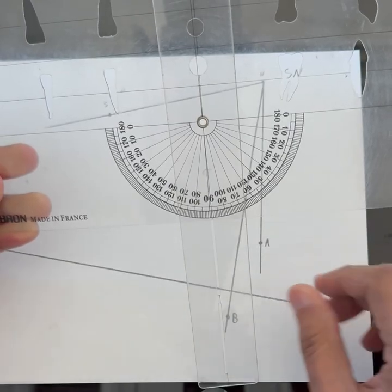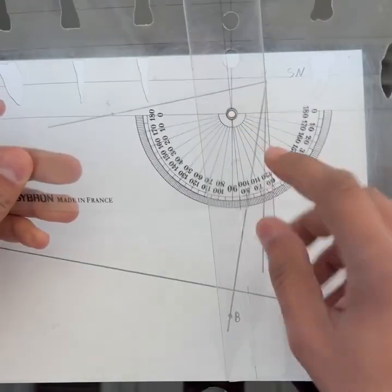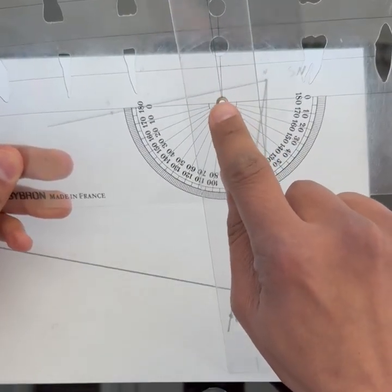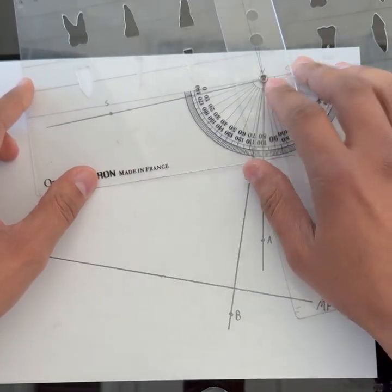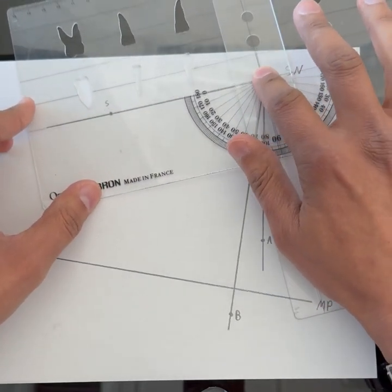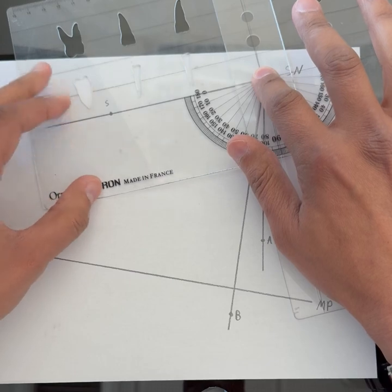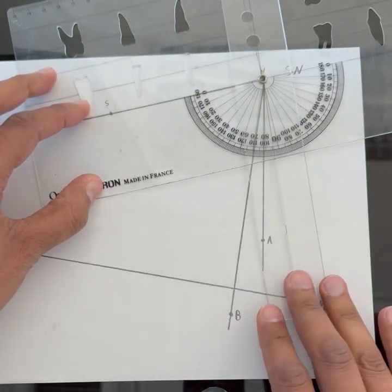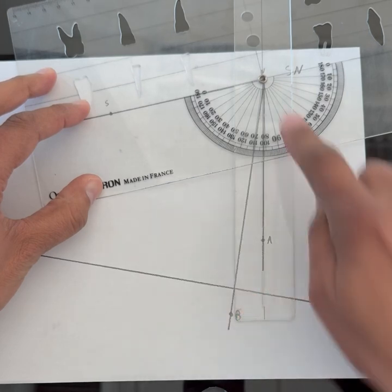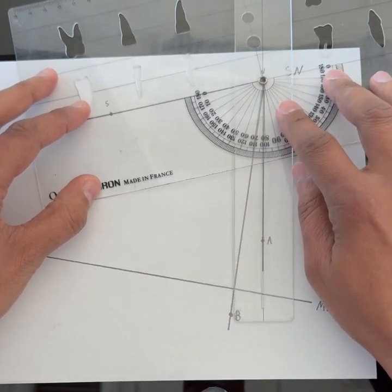To start, you want to place the center of a protractor in the center of the angle you're measuring. You want to make sure that this line aligns with your first line and then this line aligns with the other line of the angle that you're trying to measure.